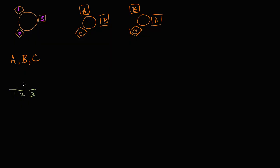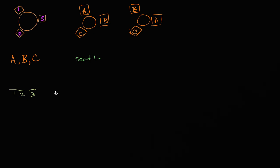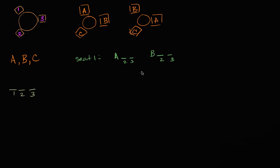First, what are the scenarios for who could sit in seat one? Well, A could sit in seat one — we haven't filled seat two or seat three yet. B could sit in seat one — we haven't figured out seat two or seat three yet. And C could sit in seat one, and we still have to figure out who's going to sit in seats two and three.